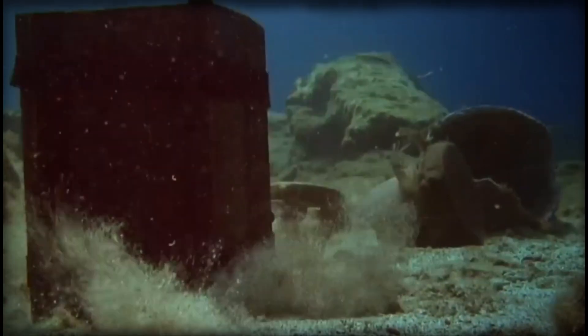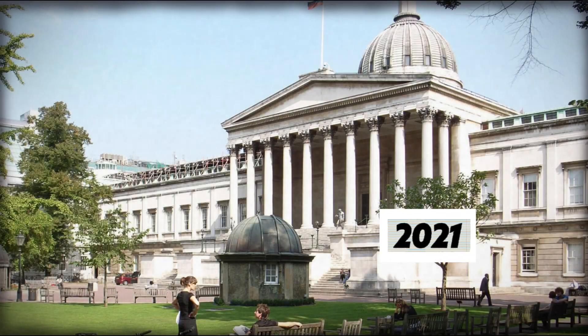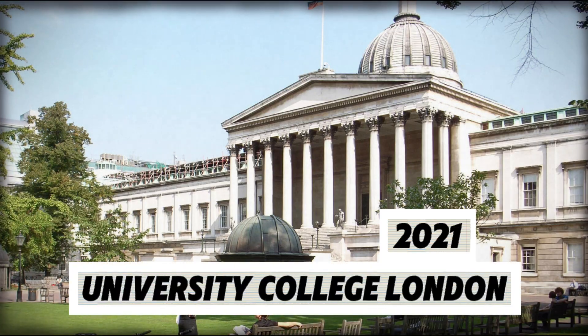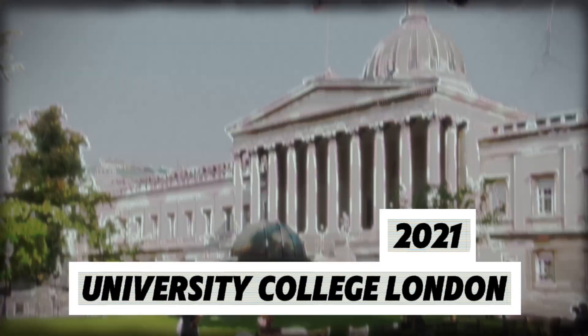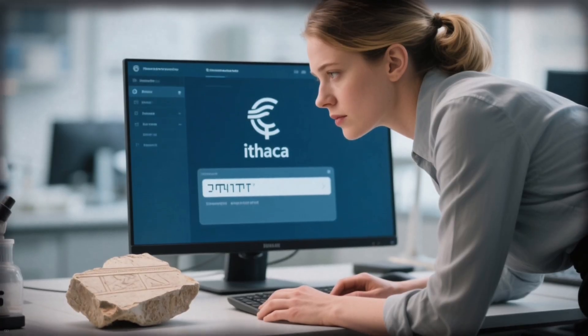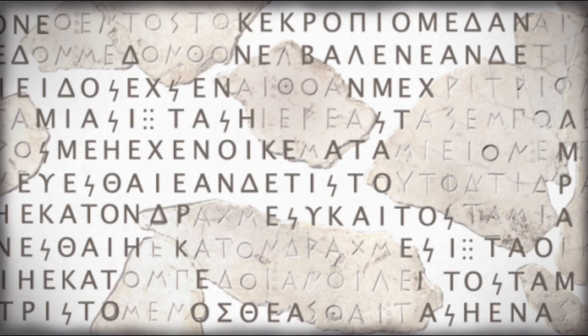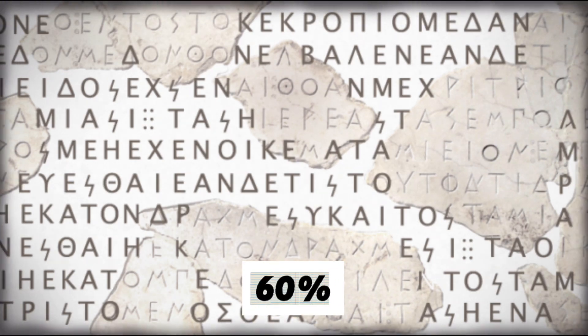Then, more than 2,000 years after the device sank beneath the waves, artificial intelligence entered the story. In 2021, researchers at University College London began using a model called Ithaca, an AI system trained to restore damaged ancient Greek texts. On its own, Ithaca could predict missing letters with about 60% accuracy. But when combined with expert historians, that accuracy jumped to over 70%.